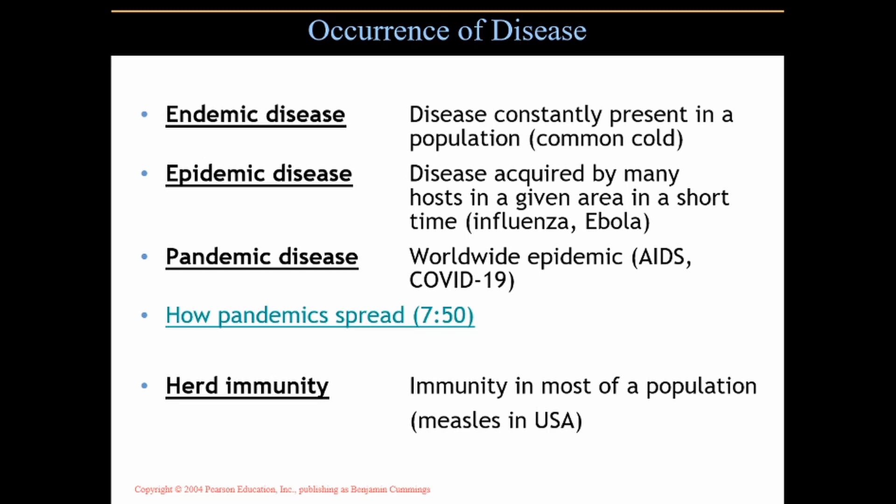AIDS is a pandemic. Right now, COVID-19 is a pandemic — it's in hundreds of countries globally. COVID-19 started out as an epidemic disease; many people got it in a very short period of time, but because of its contagious nature it spread around the world in a matter of months, which is extremely rare for a disease to do.